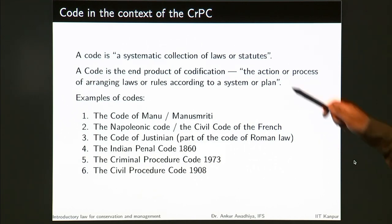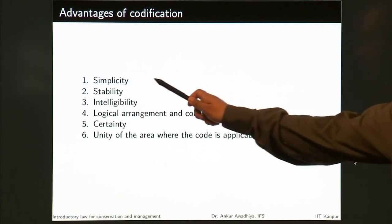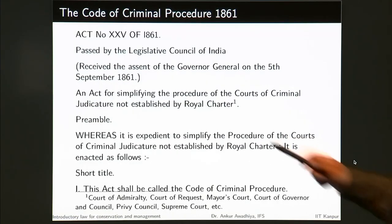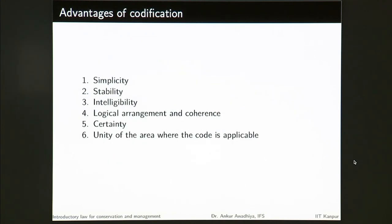Why do we perform the process of codification? It provides several advantages: it makes things simple — and we saw that in the case of the CrPC, the objective was to simplify the procedure. It makes things stable. It makes things intelligible, so they are easy to understand. There is a logical arrangement and coherence, and there is certainty and unity of the area where the code is applicable.